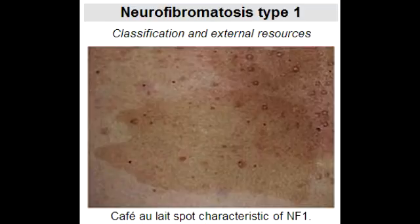What is another name for neurofibromatosis type 1? Another name for neurofibromatosis type 1 is von Recklinghausen disease.